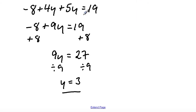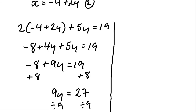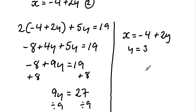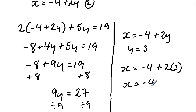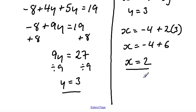We still need to work out the value of x. To do that, I'm going to substitute the value of y equals 3 into equation number two. Equation number two is x equals minus 4 plus 2y, and y equals 3. So we get x equals minus 4 plus 2 times 3. Two times 3 is 6, so x equals minus 4 plus 6. Minus 4 plus 6 is equal to 2, so x equals 2.